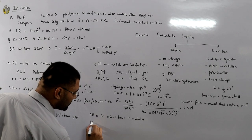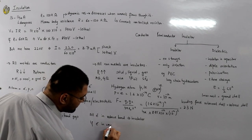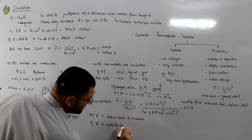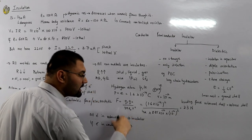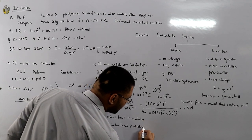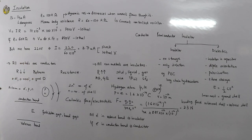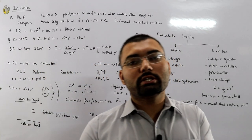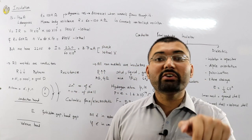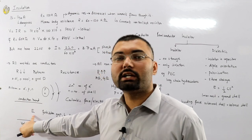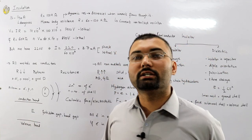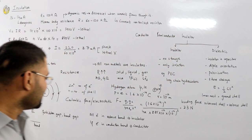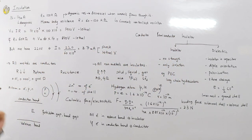Whereas if electrons are present in the conduction band, they are free electrons available for conduction, and the material acts as a conductor. Additionally, if you have electrons in the valence band and you supply E amount of energy, you can shift them to the conduction band where they become available for conduction.